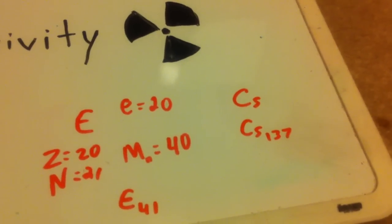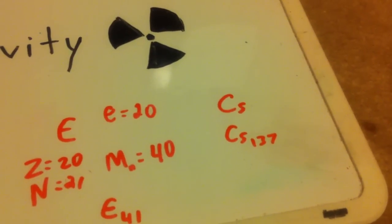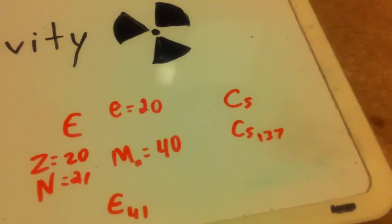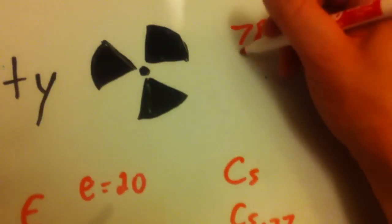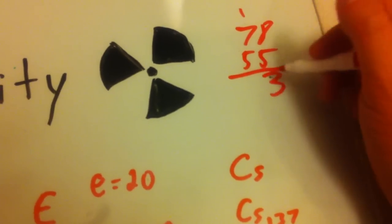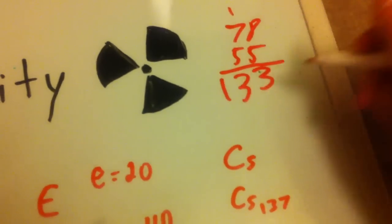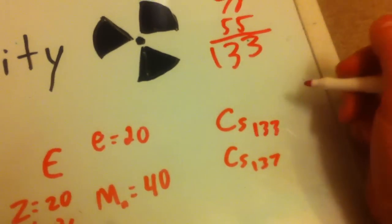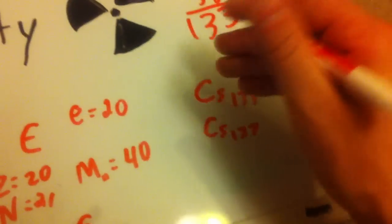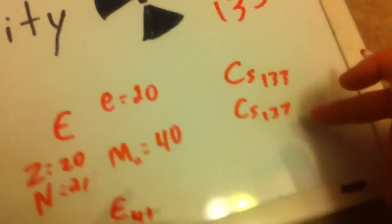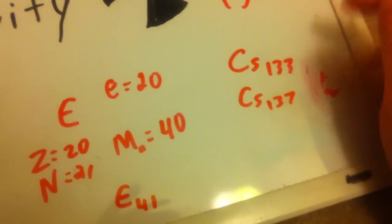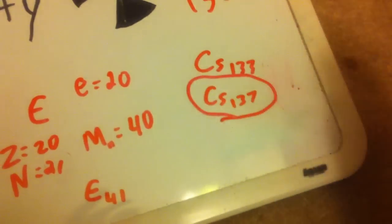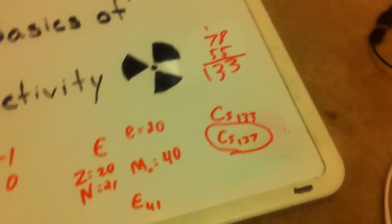Cesium-137 is the radioactive version. Cesium normally has 55 protons. Cesium-133 has 78 neutrons, and 78 plus 55 equals 133 — so cesium-133 is the stable version. You don't need to write 133 because anybody who knows you're talking about cesium will look up the stable version. But cesium-137 is different — it has four additional neutrons, and those four extra neutrons are what causes cesium-137 to become radioactive.